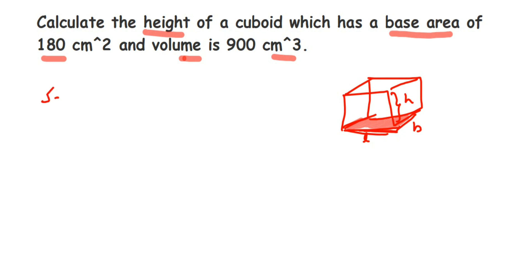So here's a solution. Base area is equal to 180 centimeter square, so base area means length into breadth is equal to 180 centimeter square. And they have also given the volume, so volume is equal to 900 centimeter cube. Now we know volume formula is volume of cuboid is length into breadth into height, right? And this is equal to 900.